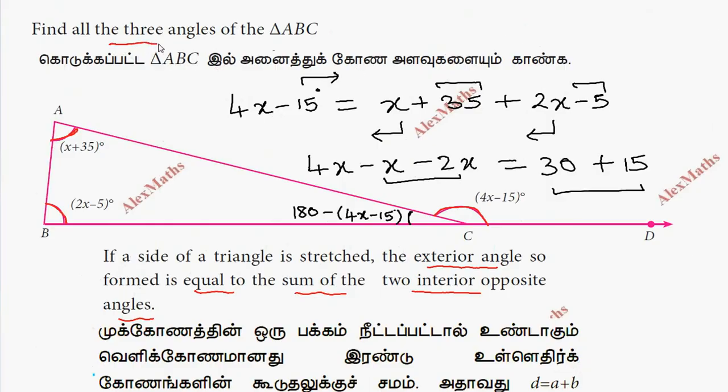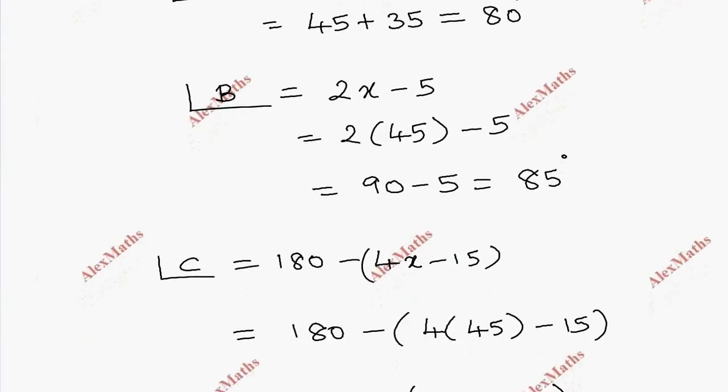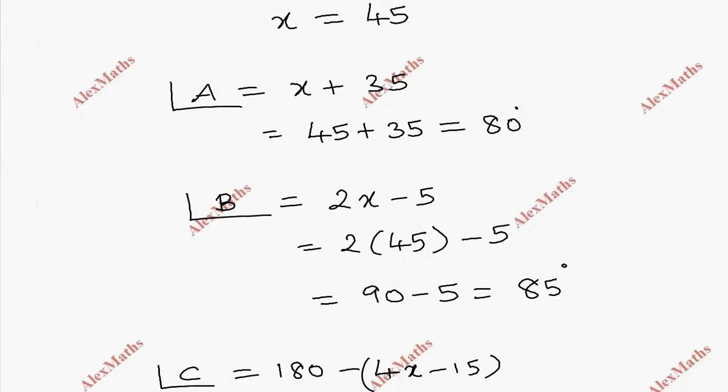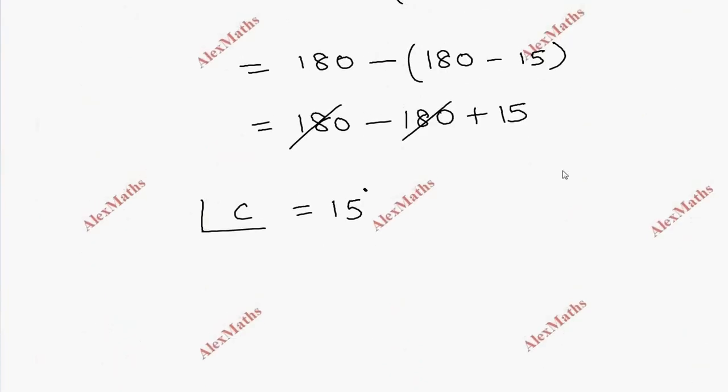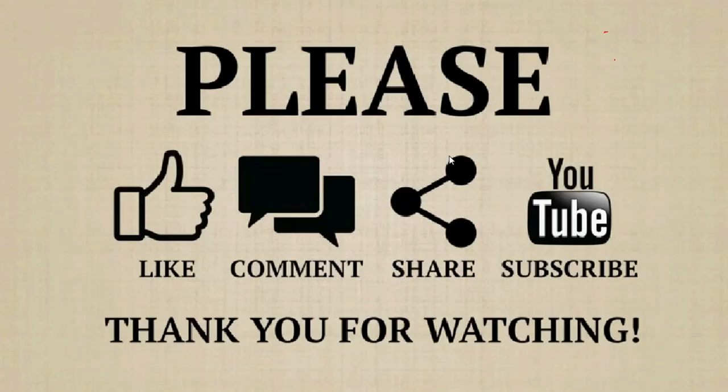So we found all three angles of the triangle: angle A is 80 degrees, angle B is 85 degrees, and angle C is 15 degrees.